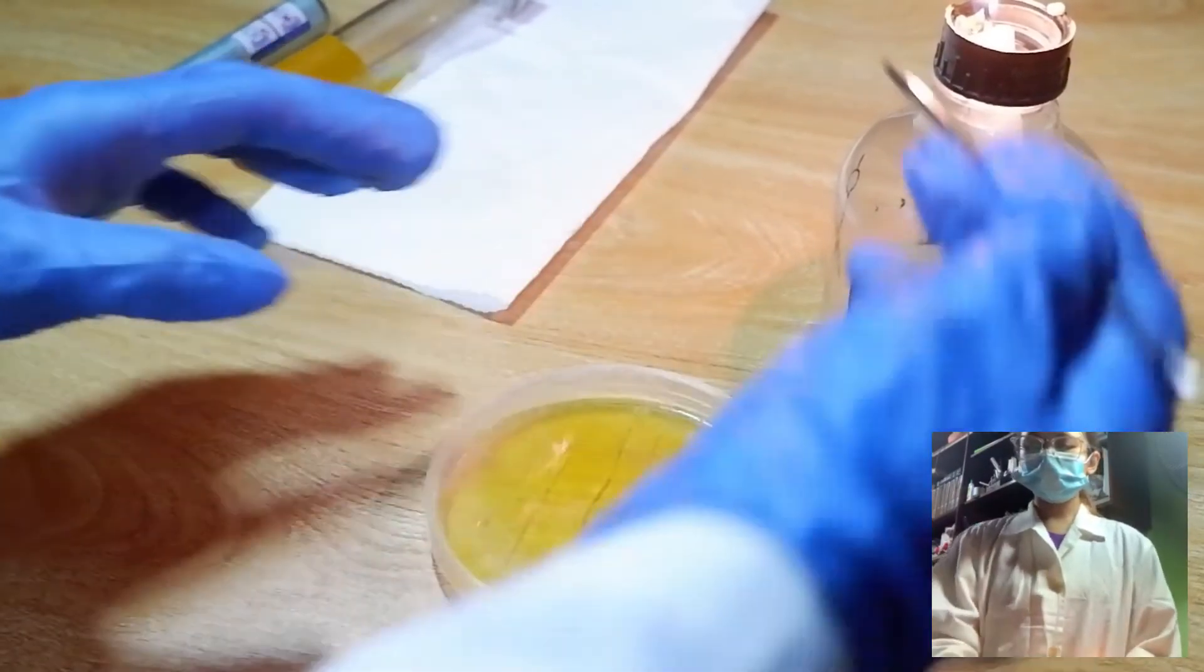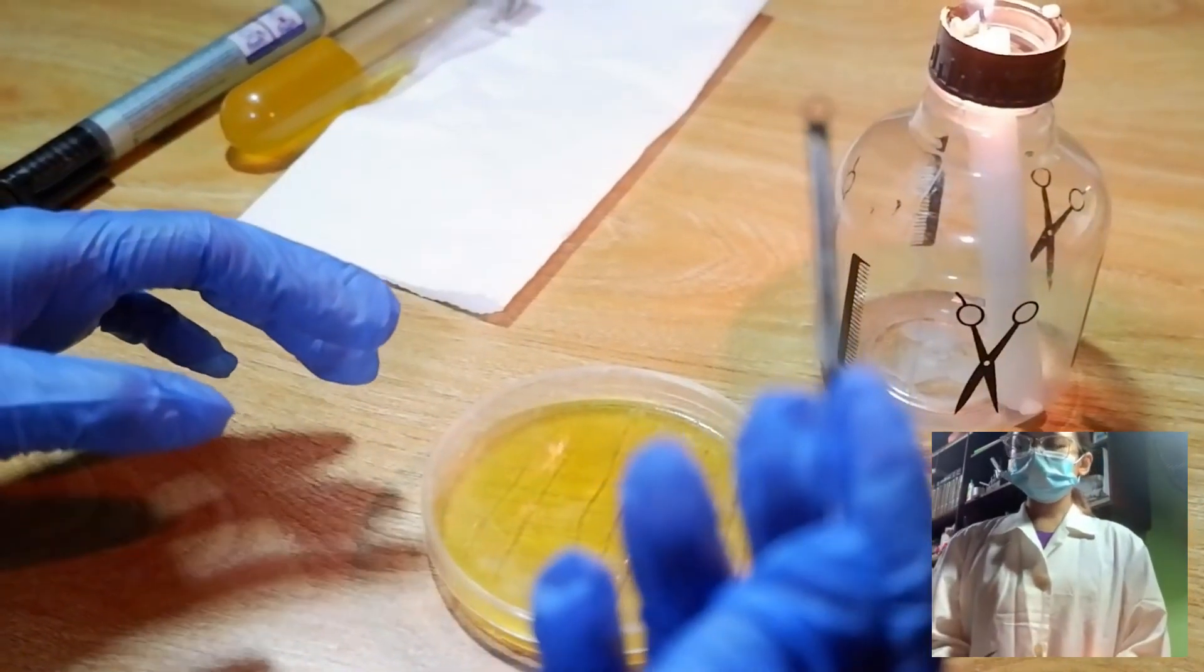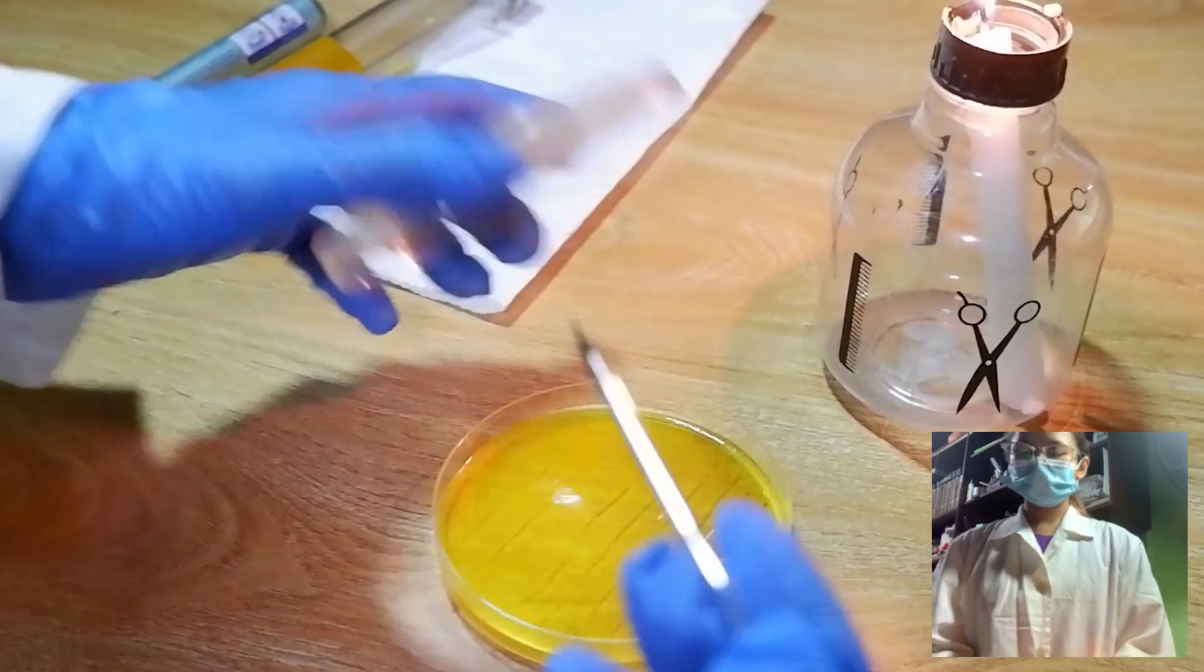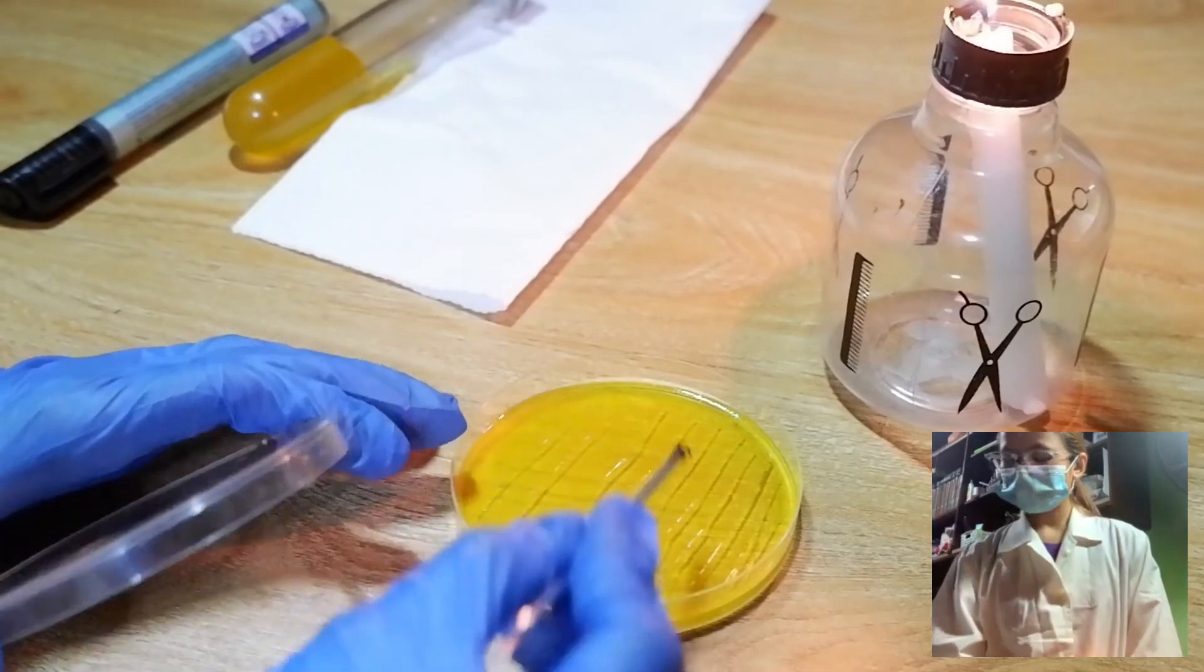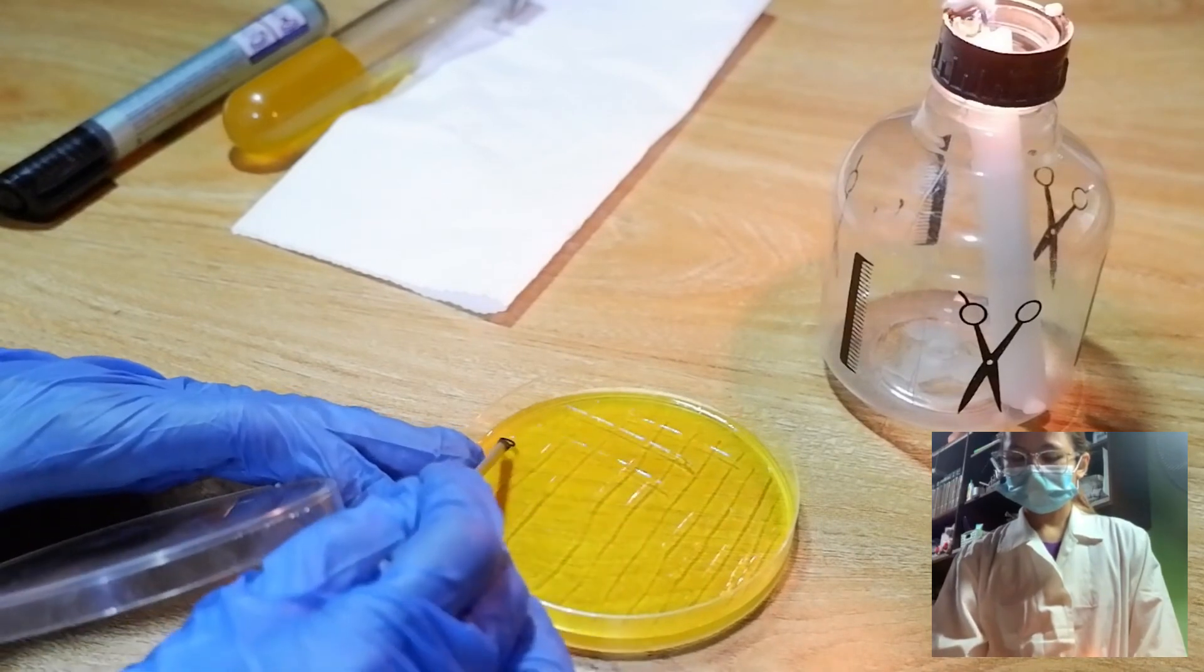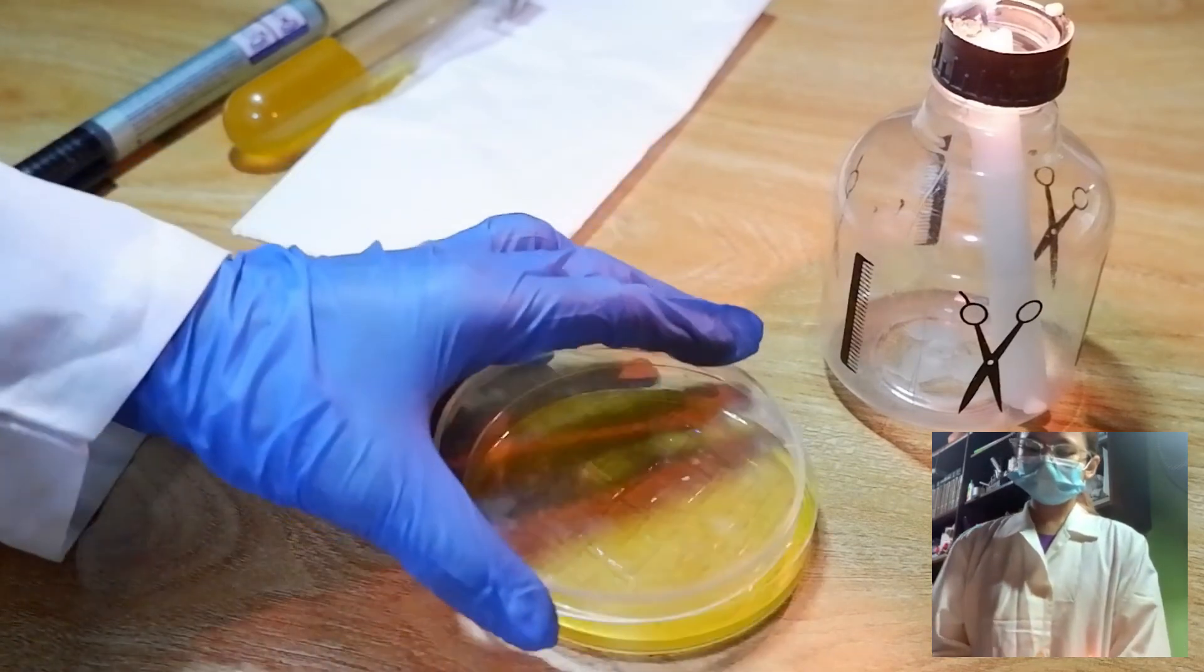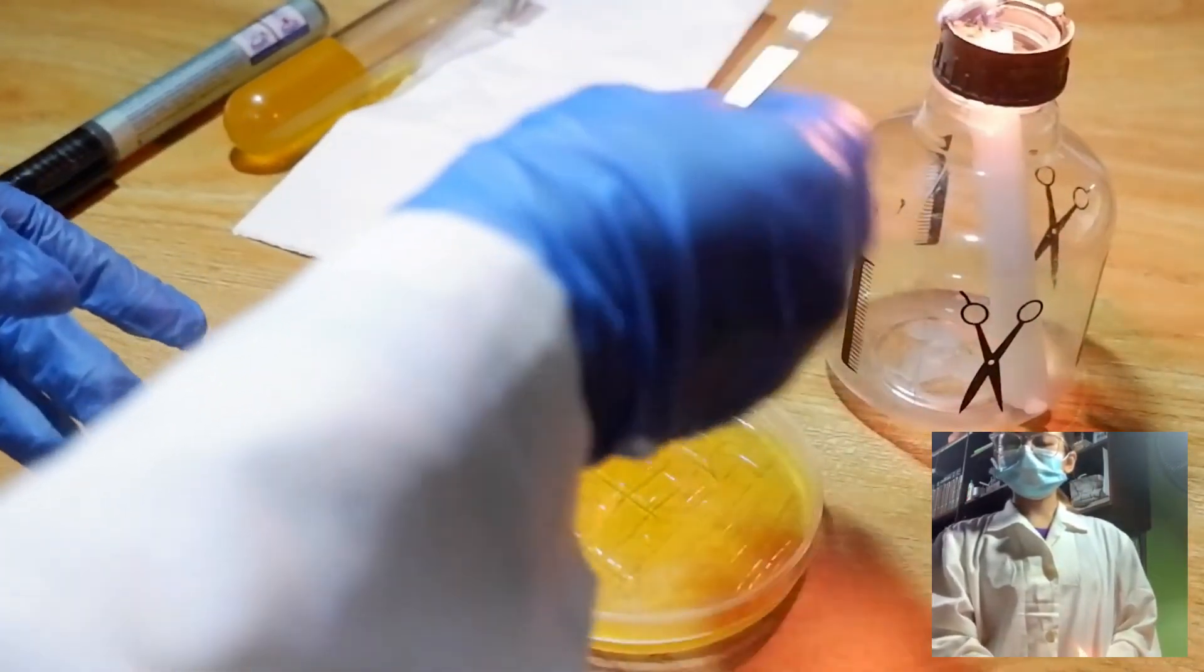And then, flame the loop again and allow it to cool down for 5 to 10 seconds. Now, we will cross streak over the last group of streaks. So, cross. Flame the loop again before putting it down to sterilize.